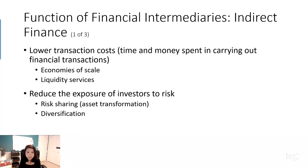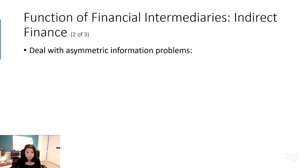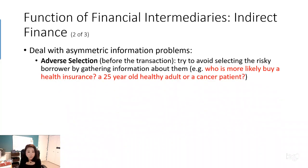Now, as we mentioned the benefits of having a financial intermediary, the question is: do you think there are no troubles facing financial intermediaries? The answer is no — they do face challenges. The main challenge they face is called asymmetric information. Asymmetric information has two categories. The first is called adverse selection, which happens before a transaction occurs. The idea is that people try to avoid selecting risky borrowers.